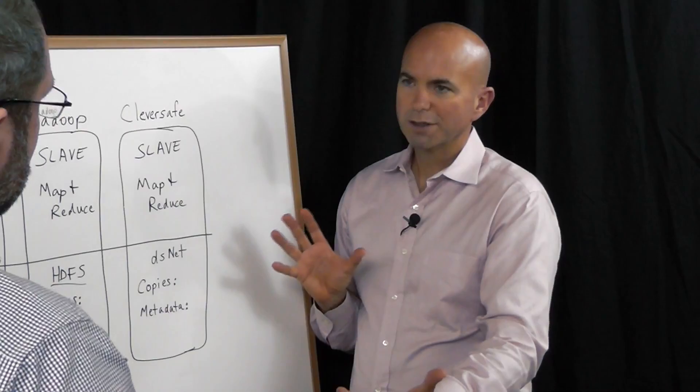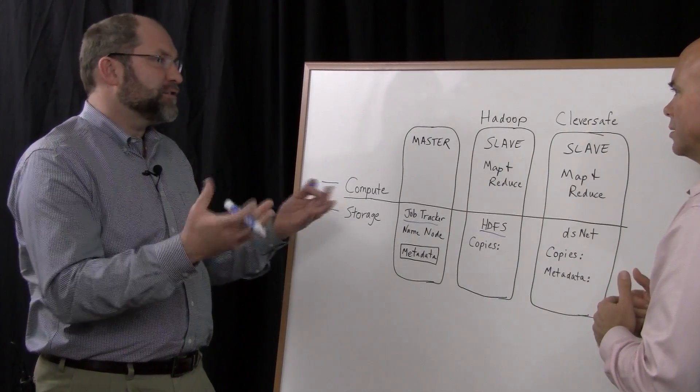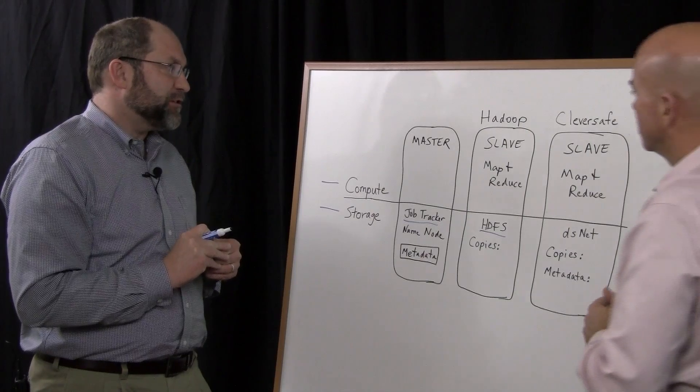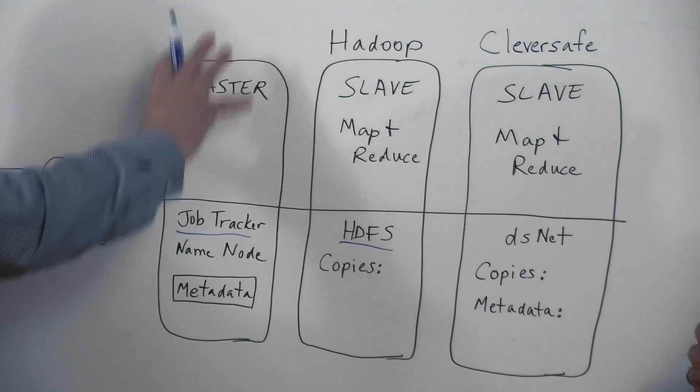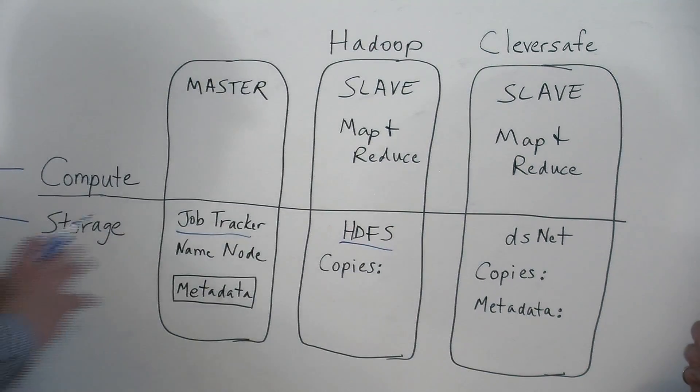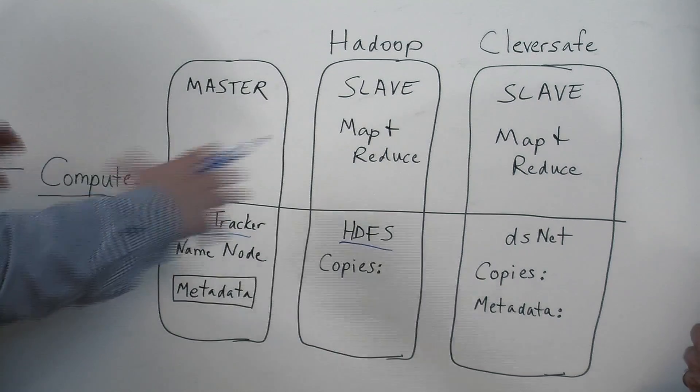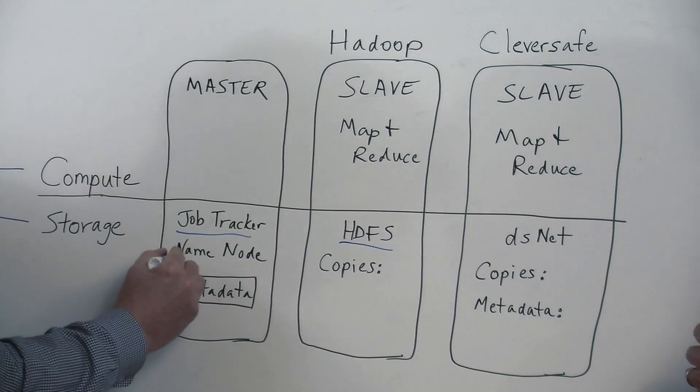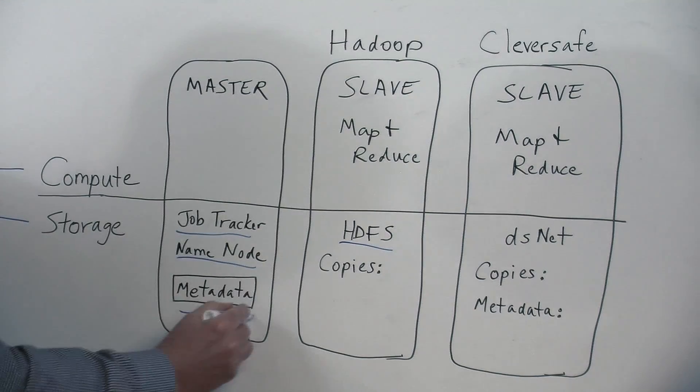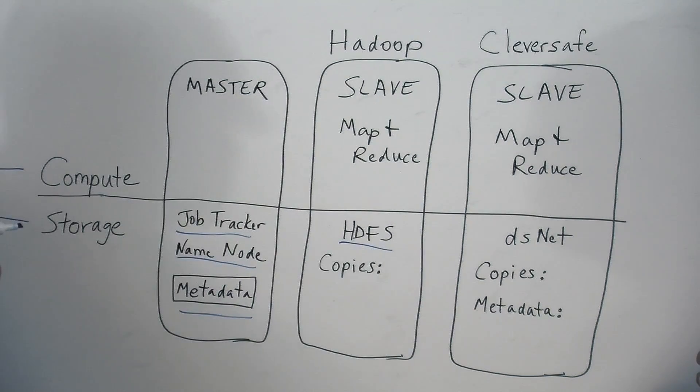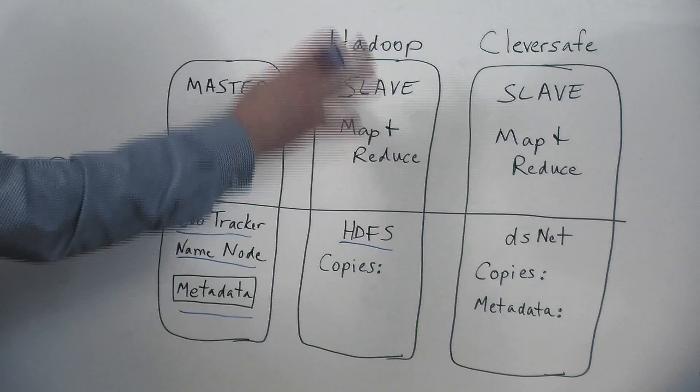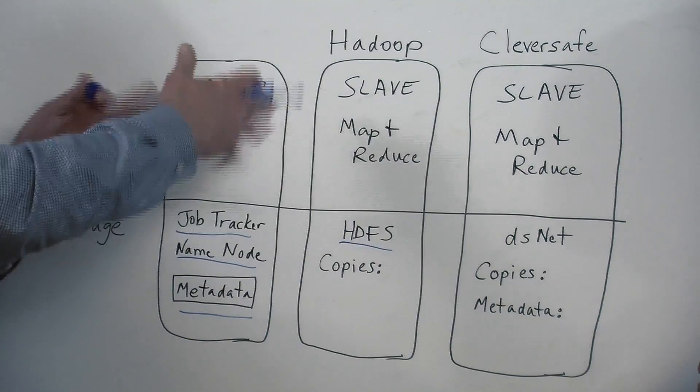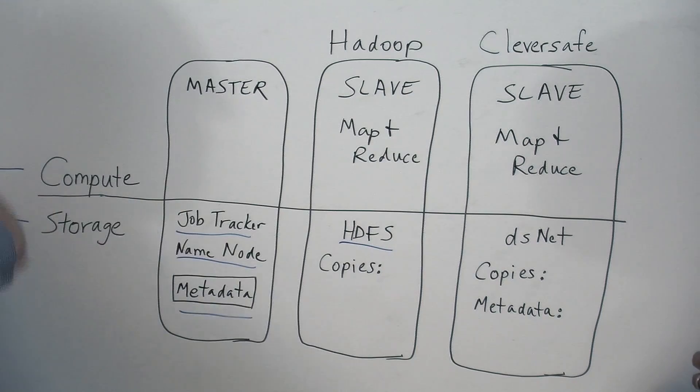So the storage component of Hadoop, which is called the Hadoop Distributed File System, or HDFS, enables you to partition the data out across all your storage nodes. And then the computation portion of Hadoop, which runs on a master node in the form of the job tracker, is able to parse out the computing tasks to all those cluster nodes so that each piece of the overall big workload can take place on data that's stored locally on that node. So HDFS is essentially a clustered file system. It's a distributed file system for a cluster of storage nodes or servers.